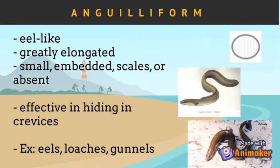Anguilliform is the fourth type of body form. Anguilliform fish have eel-like bodies that are greatly elongated or attenuated. They also have small embedded scales, which are absent in some species. This shape is effective for hiding in crevices in the reefs and rocks to ambush prey. Examples of fish with this body form are eels, loaches, and gunnels.